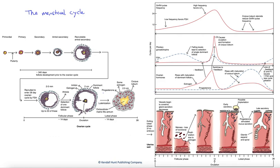This complex figure shows the menstrual cycle, which is really the combination of the ovarian cycle as well as what happens with the lining of the uterine wall.